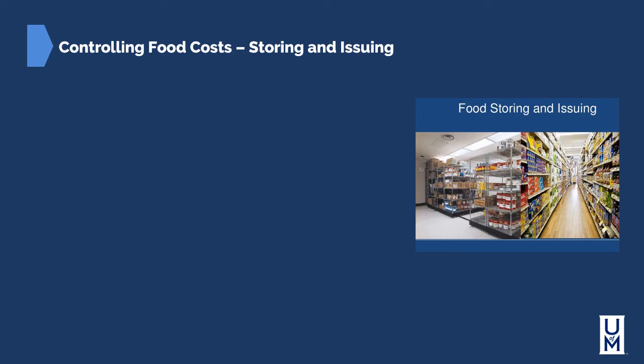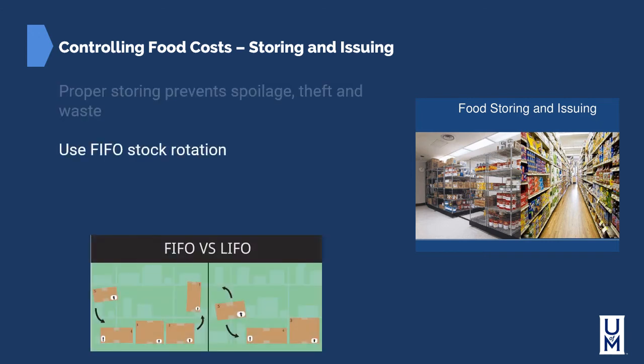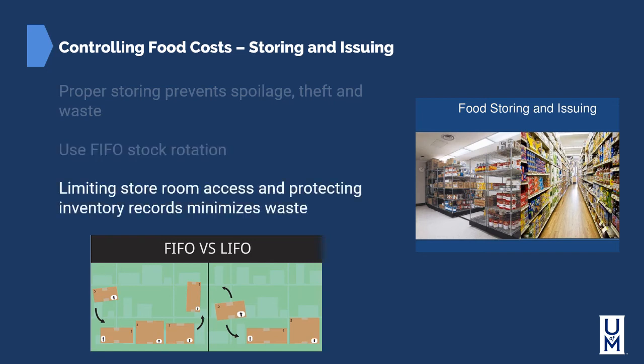In the storing and issuing of products, you can control food costs through proper storing to prevent spoilage, theft, and waste. We want to use FIFO stock rotation — first in, first out — where the oldest product is rotated to the front and the newest placed in the back. There are situations where you may want to use LIFO (last in, first out), such as when you need the freshest ingredients for a salad bar. Limiting storeroom access and protecting inventory records minimizes waste.